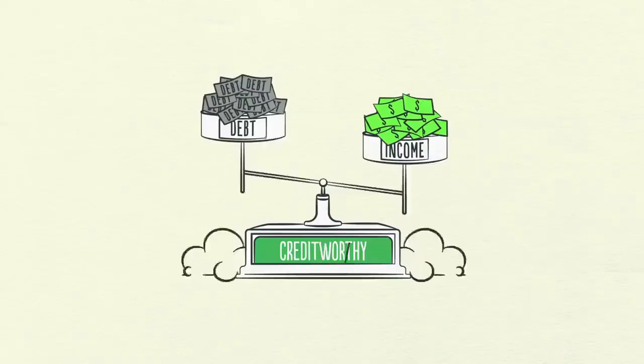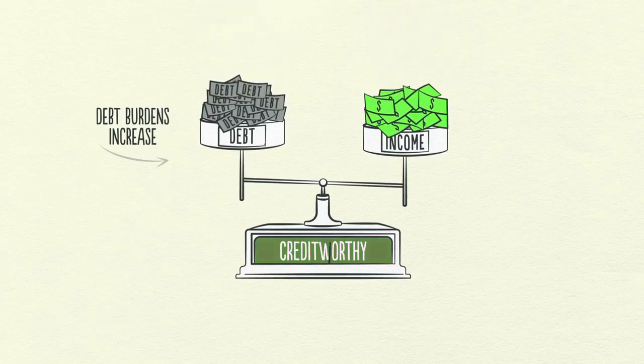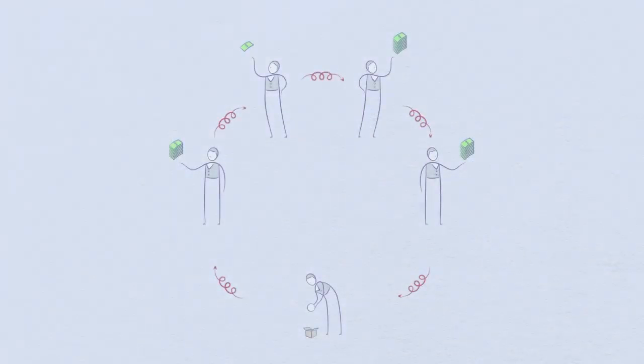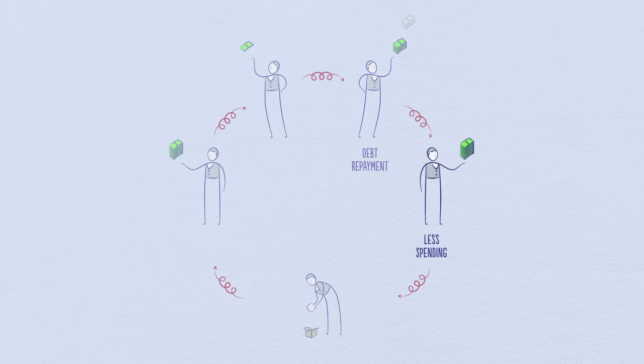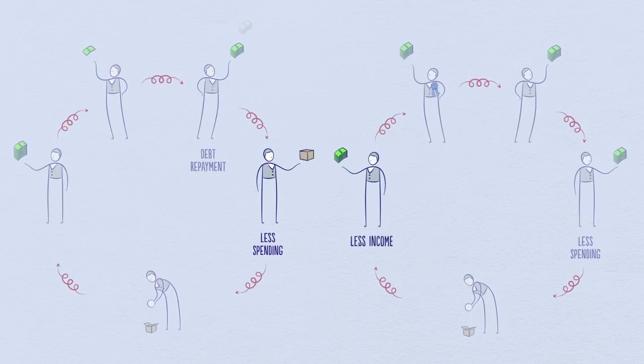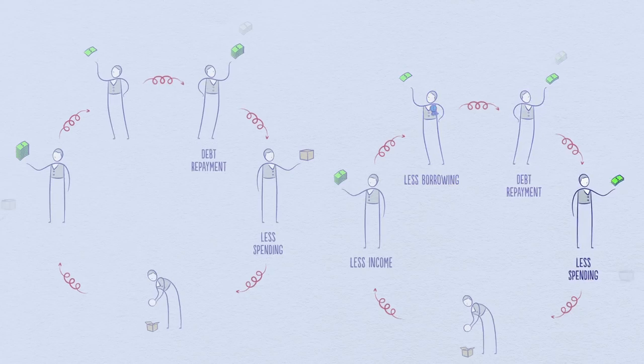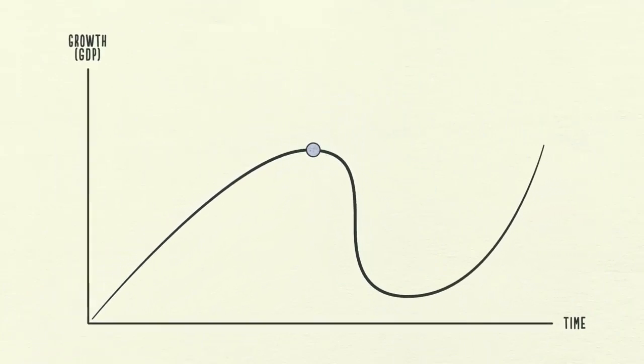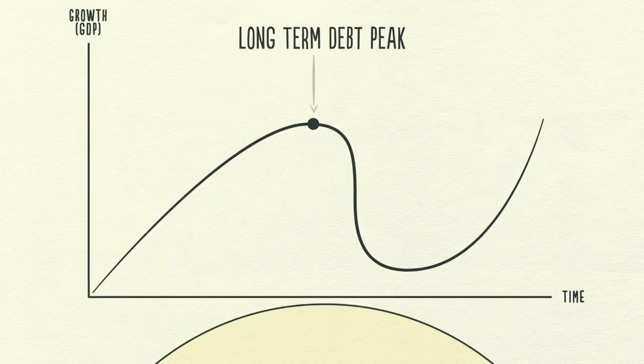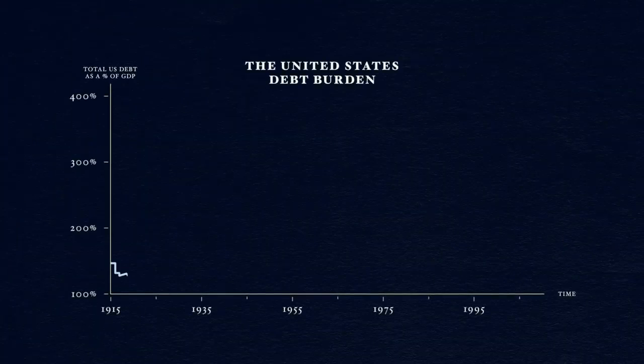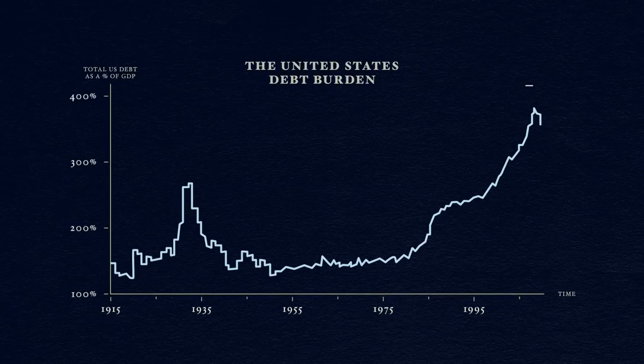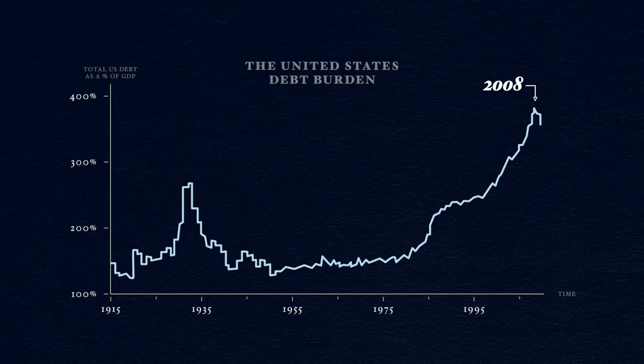But this obviously cannot continue forever. And it doesn't. Over decades, debt burdens slowly increase, creating larger and larger debt repayments. At some point, debt repayments start growing faster than incomes, forcing people to cut back on their spending. And since one person's spending is another person's income, incomes begin to go down, which makes people less creditworthy, causing borrowing to go down. Debt repayments continue to rise, which makes spending drop even further. And the cycle reverses itself. This is the long-term debt peak. Debt burdens have simply become too big. For the United States, Europe, and much of the rest of the world, this happened in 2008. It happened for the same reason it happened in Japan in 1989 and in the United States back in 1929.